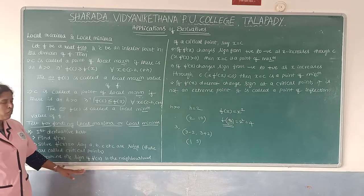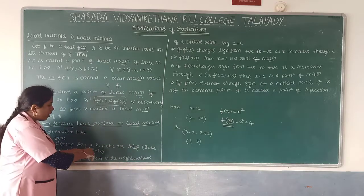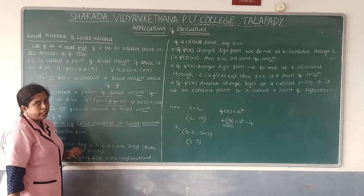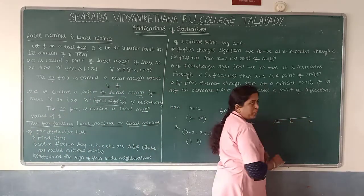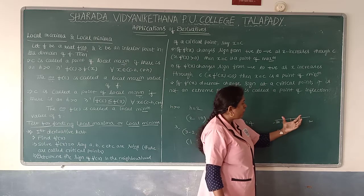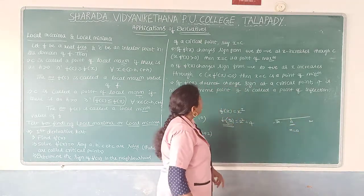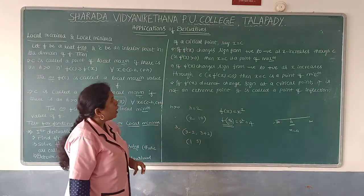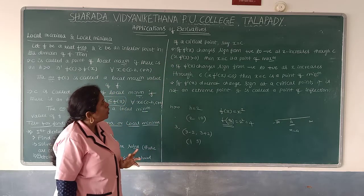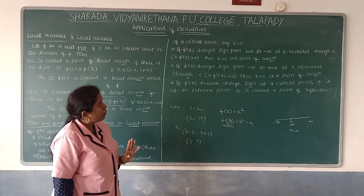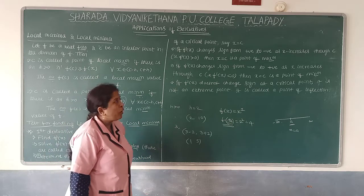Next, determine the sign of F'(x) in the neighborhood of the critical point, say x = c. For example, if the critical point is 'a', the real line is divided into two intervals: (−∞, a) and (a, ∞). If F'(x) changes sign from positive to negative as x increases through c, then x = c is called a point of local maximum.